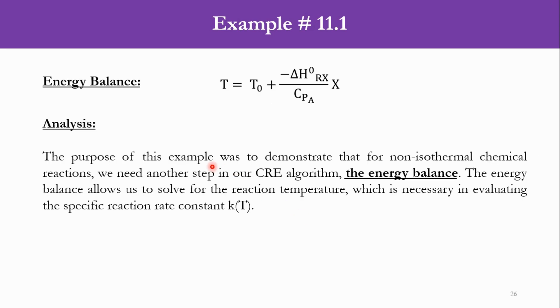The purpose of this example was to demonstrate that for non-isothermal chemical reactions, we need another step in the algorithm: the energy balance. This allows us to solve for the reaction temperature, necessary for evaluating the specific reaction rate constant k(T). There are six steps for non-isothermal systems: mole balance, rate laws, stoichiometry, energy balance, combine, then evaluate.